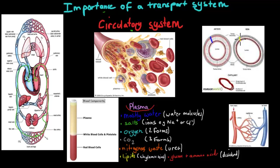Whereas the veins just carry blood back to the heart and they have thinner muscular walls because they have to withstand less pressure. Also the arteries have more of an elastic layer — they're more bouncy because when the heart beats the lumen needs to change in size, whereas if it's relaxed it needs to become smaller to make sure blood pressure is the same at all times. That means we need to have more of an elastic layer in arteries.